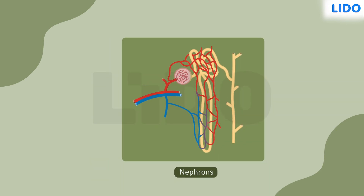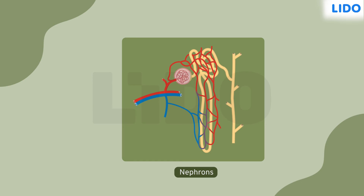This is done by the nephrons. The essential components that return to the capillaries are transported to the renal vein, which then takes it back to the heart. Nephrons are the basic structural and functional unit of the kidney. There are approximately 1 million filtering units in just one kidney that continuously filters out blood.